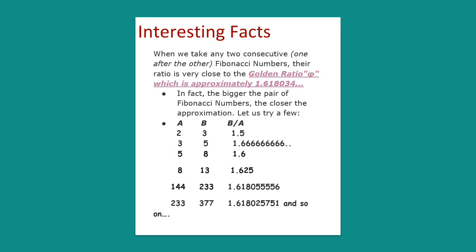Before I conclude, I would like to share an interesting fact. When we take any two consecutive Fibonacci numbers, their ratio is very close to the golden ratio φ, which is approximately 1.618. In fact, the bigger the pair of Fibonacci numbers, the closer the approximation. You can check it out yourself.